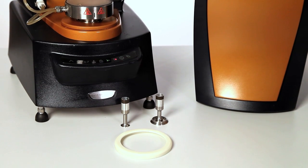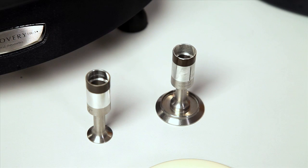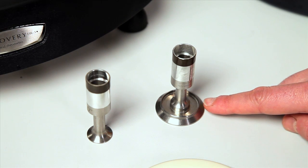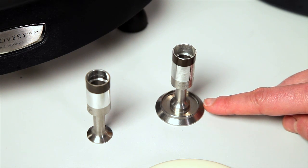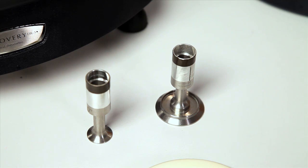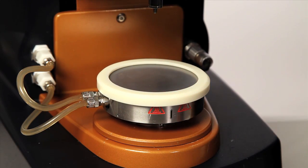Using the solvent trap is very easy. First, you must choose your geometry and make sure it has the solvent trap well. Then you fit the centering ring on the Peltier plate.